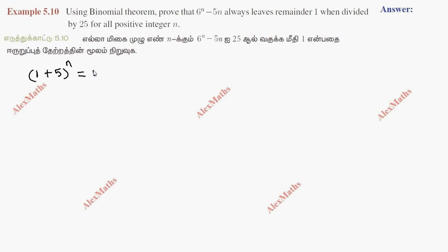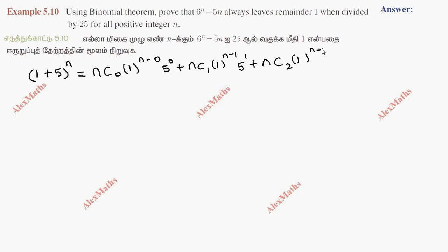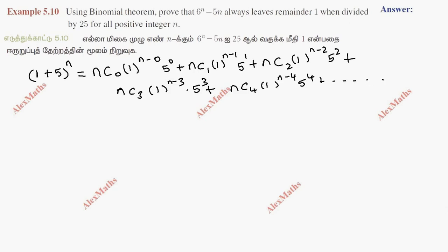The expansion gives: first term nc0 times 1 power n times 5 power 0, plus nc1 times 1 power n-1 times 5 power 1, plus nc2 times 1 power n-2 times 5 power 2, plus nc3 times 1 power n-3 times 5 power 3, plus nc4 times 1 power n-4 times 5 power 4, and so on.